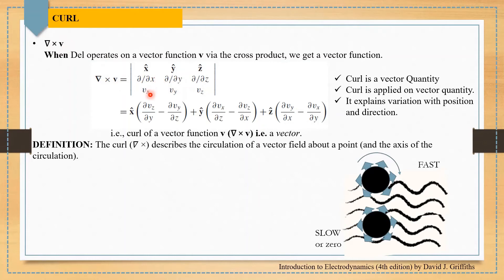I hope you are familiar with the determinant. We can simplify this determinant: x-cap multiplied by these two terms with their difference, and similarly for the y and z parts. At the end you get a vector quantity. Hence, curl of a vector function always gives a vector quantity. So we can say curl is a vector quantity and curl is always applied on a vector quantity.